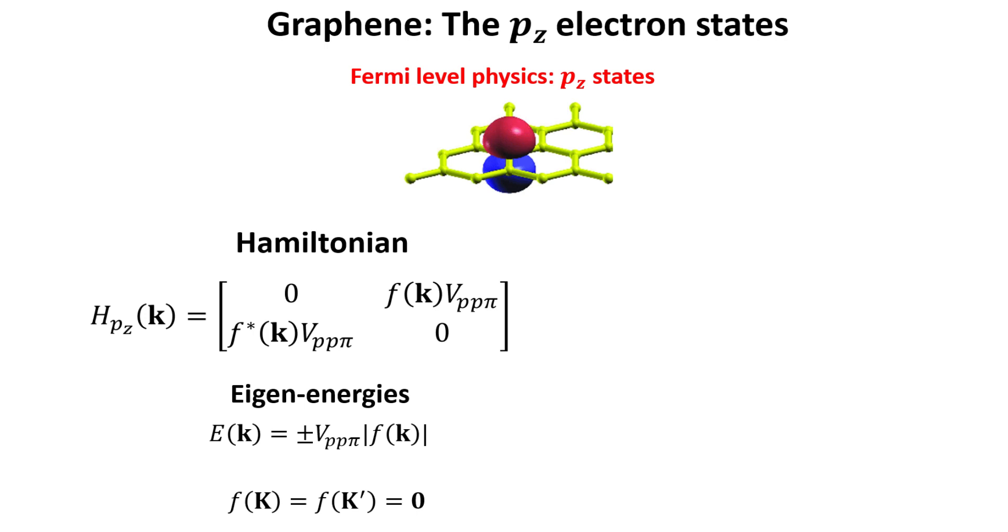Note that the momentum dependence of the energies is given by the absolute value of the structure factor f. This structure factor has the feature that it vanishes to zero at the K and K prime points in the Brillouin zone. Hence conduction and valence bands cross at the Fermi level, reproducing this important feature of the band structure of graphene we mentioned previously.